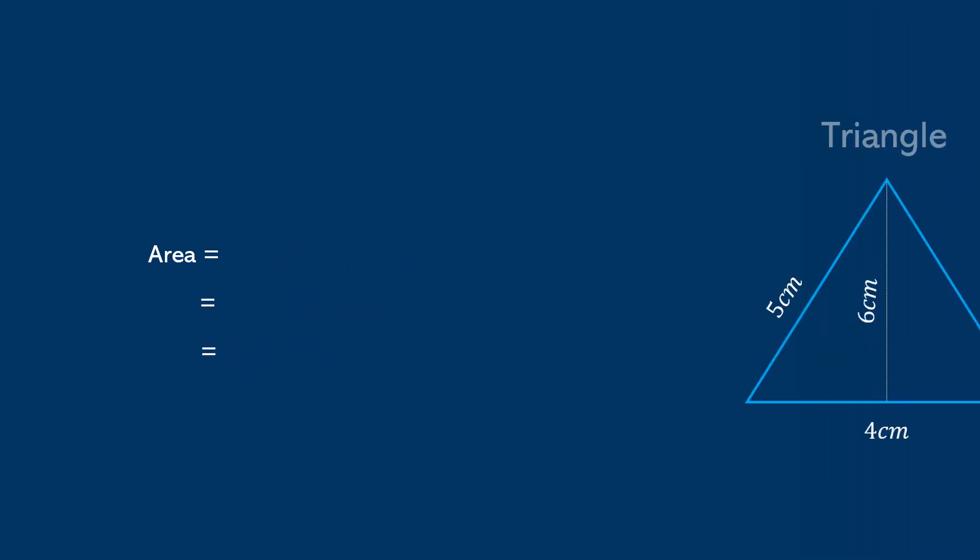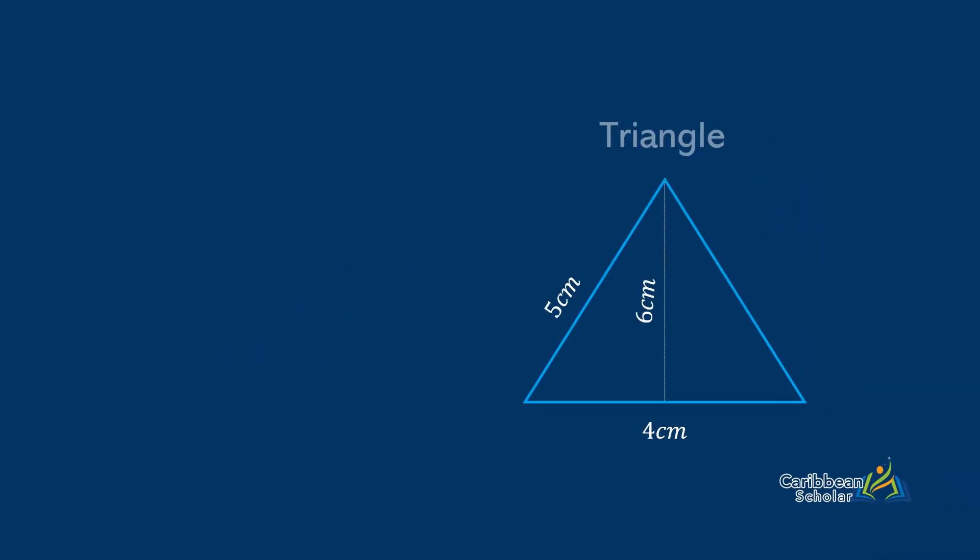Next, we have the triangle, and the area of a triangle is given by 1 half times the base of the triangle times its height. In this case, that gives us 1 half by 4 times 6, and that's 12cm².